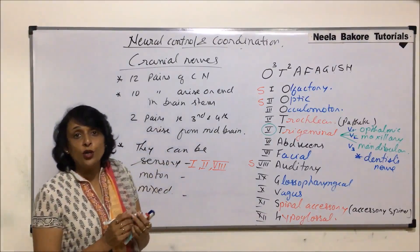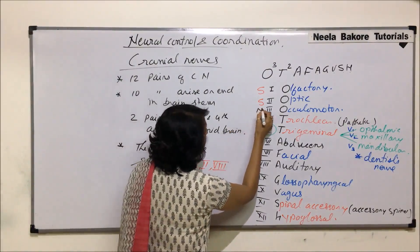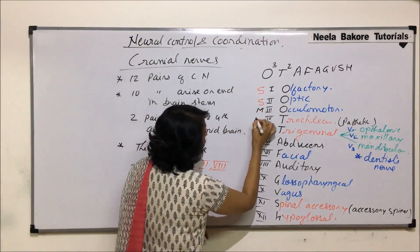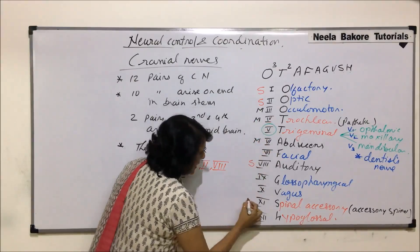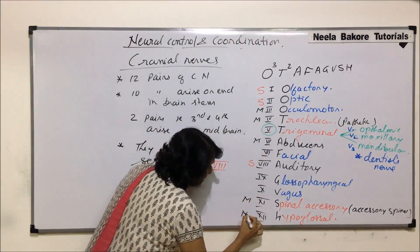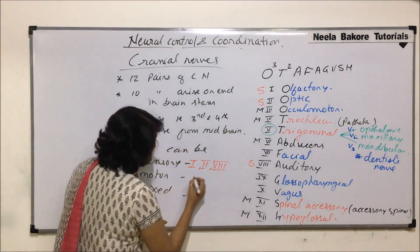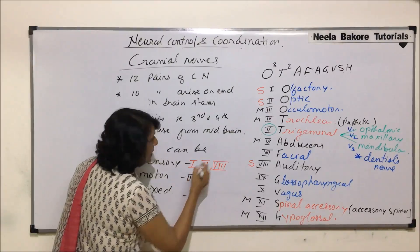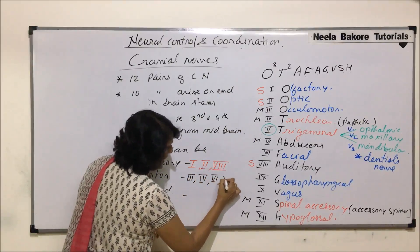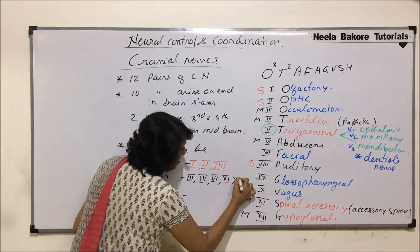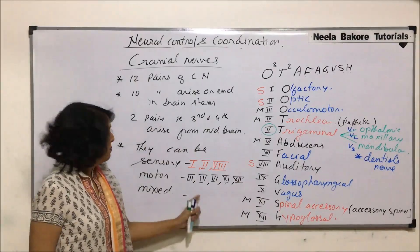The motor nerves are the third, fourth, sixth, eleventh, and twelfth cranial nerves. These five are the pure motor nerves, originating from the brain stem and carrying signals to muscles and organs.